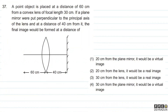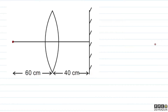Let's have a look at question number 37. The question says: a point object is placed at a distance of 60 cm from a convex lens of focal length 30 cm. If a plane mirror were put perpendicular to the principal axis of the lens at a distance of 40 cm from it, the final image would be formed at what distance? The focal length of the convex lens is 30 cm and the object is placed 60 cm from the lens.